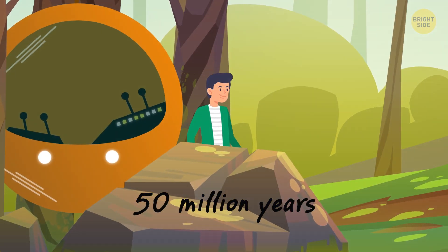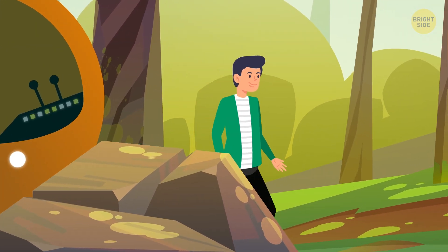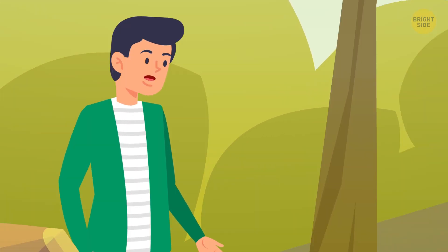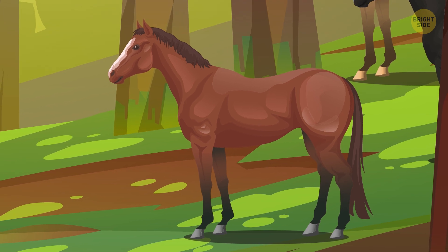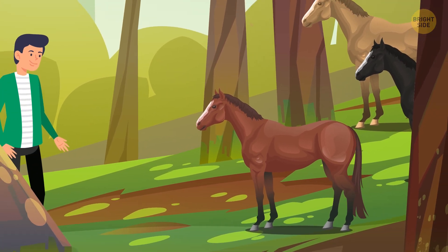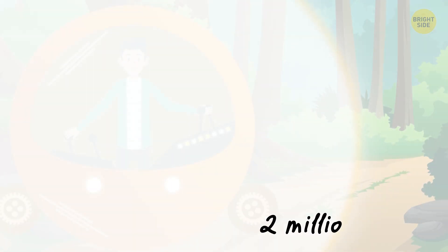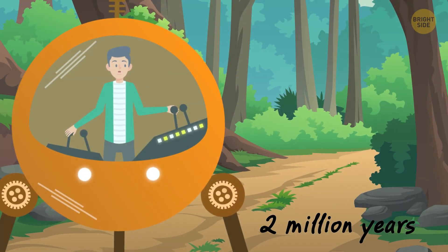50 million years into the past turns out to be a curious time. Sam notices a cute dog-sized animal that resembles a horse. Right! The first horses were rather miniature creatures living in the forests. The next stop is 2 million years deeper into the past.